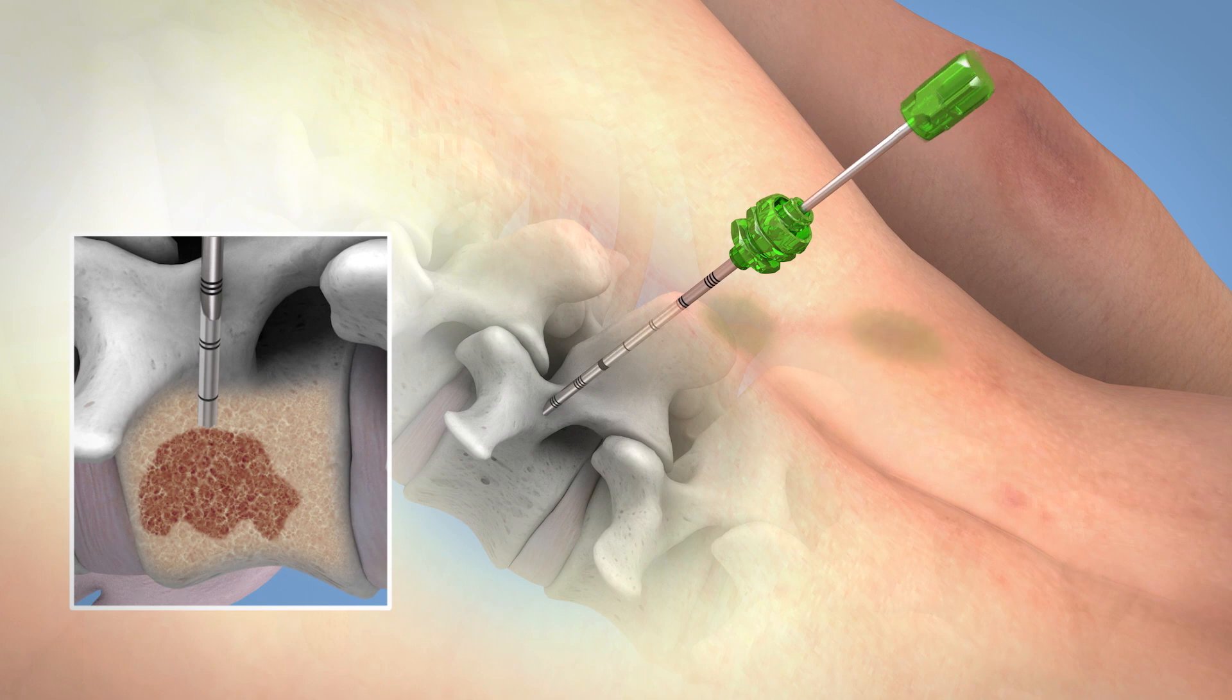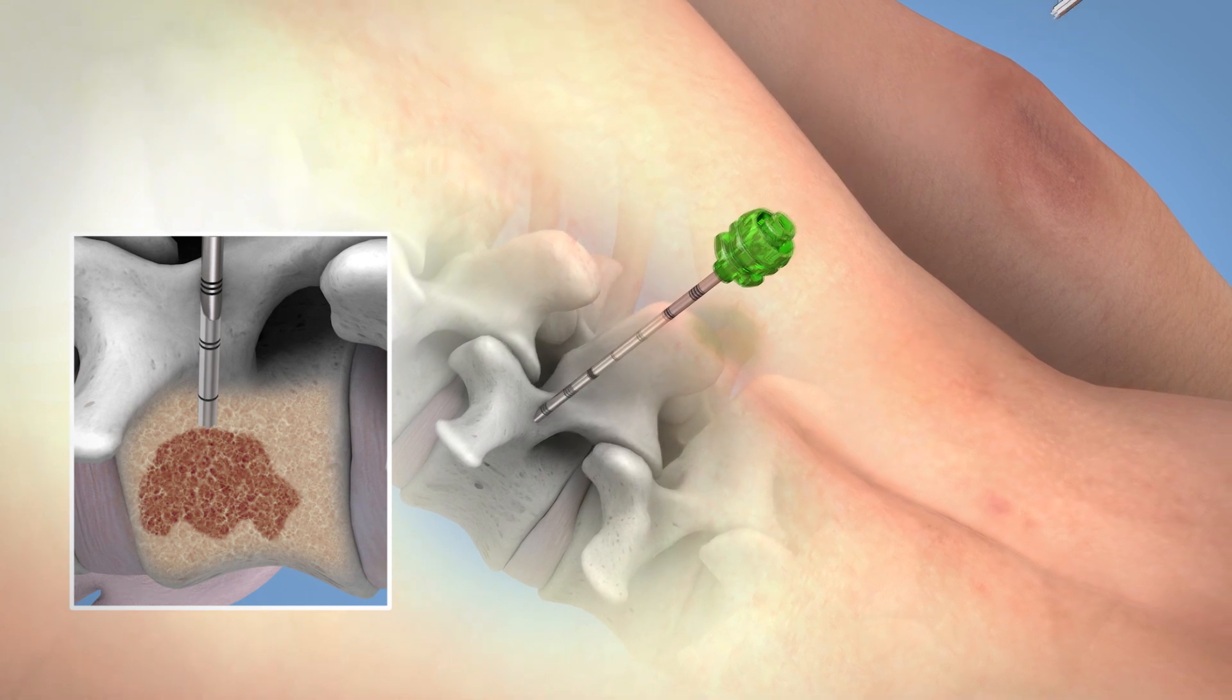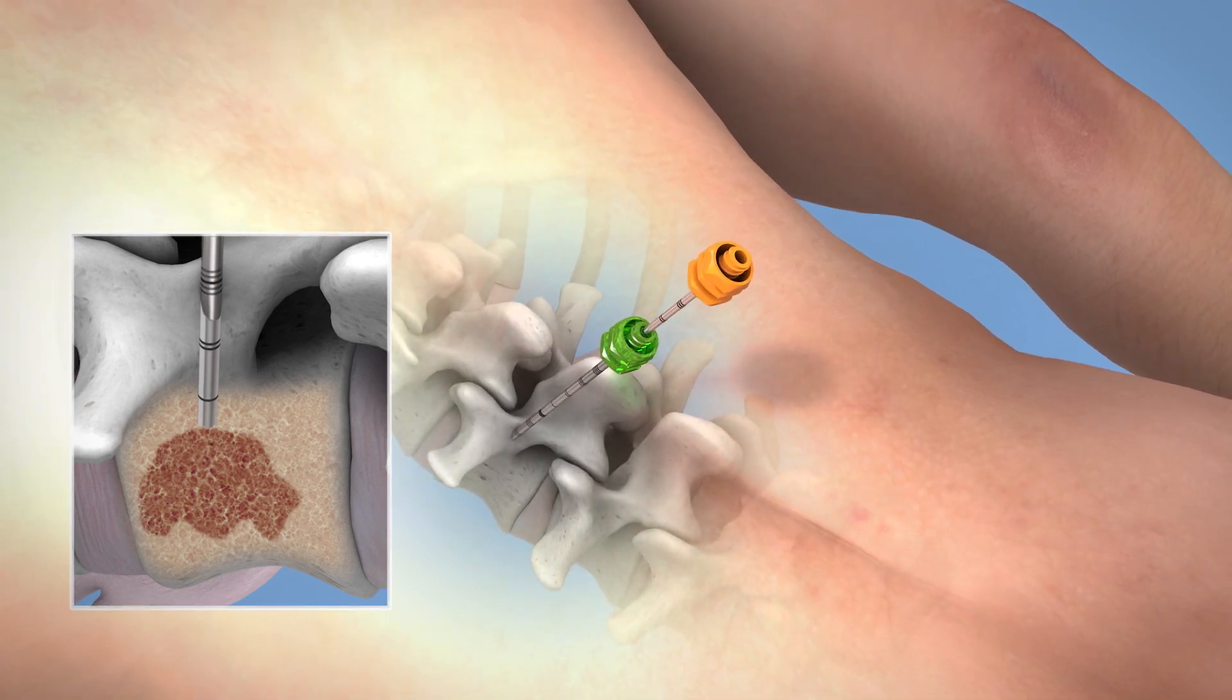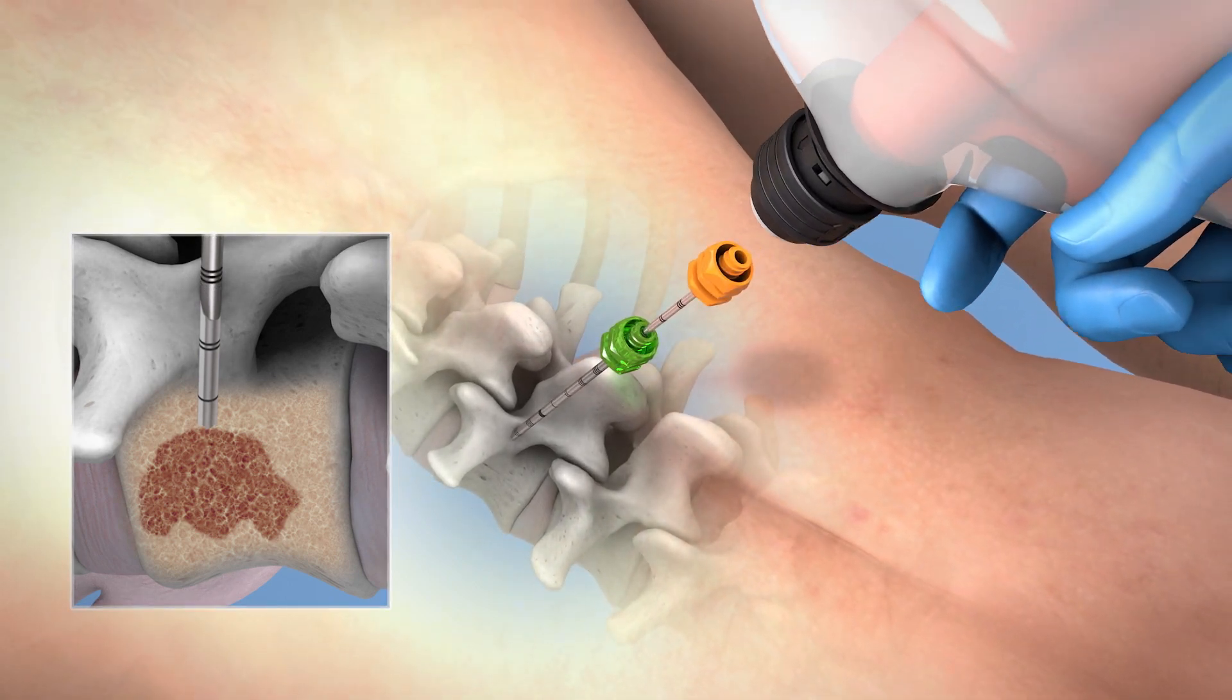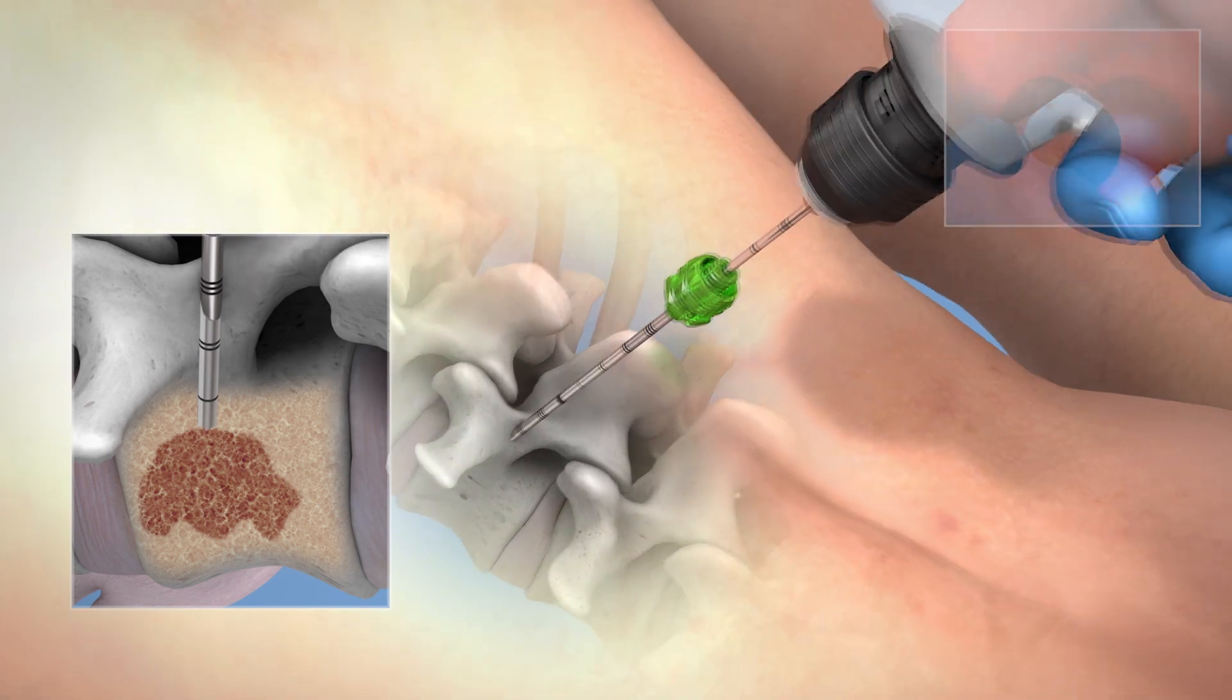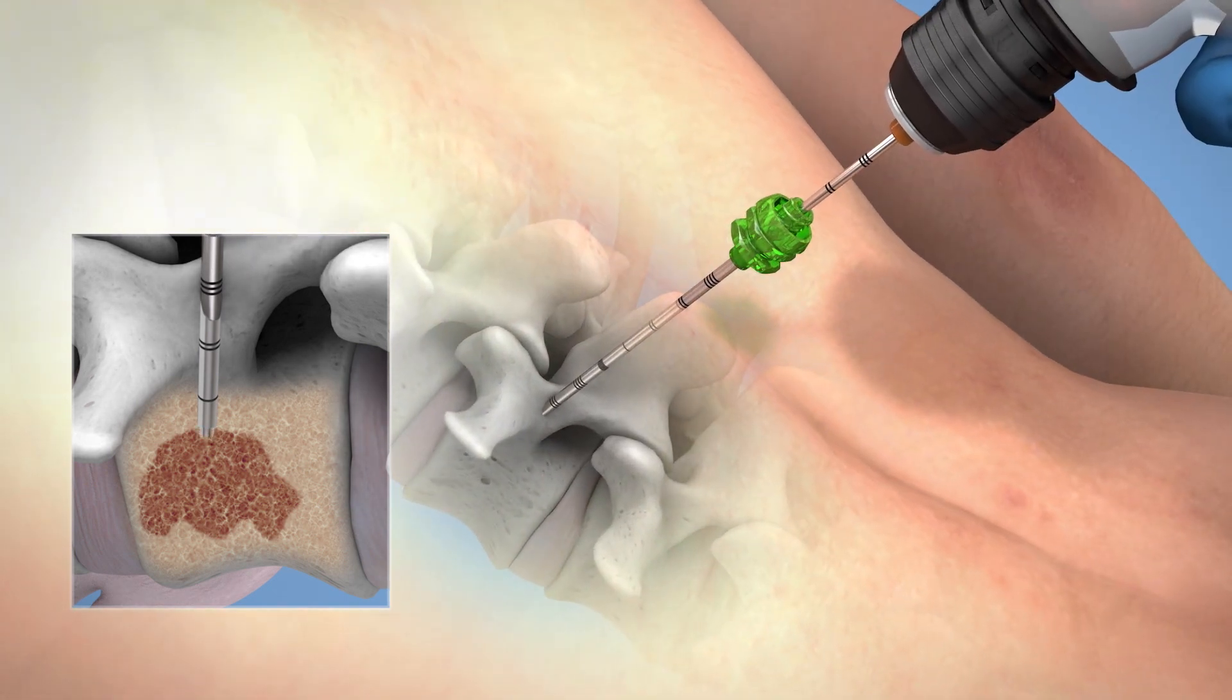Twist and lift the stylet from the needle set. Place the bone lesion biopsy needle inside the bone access cannula. Reattach power driver to bone lesion biopsy needle. Using centimeter marks on the needle as a guide, squeeze the driver trigger and advance the bone lesion biopsy needle to desired biopsy length.